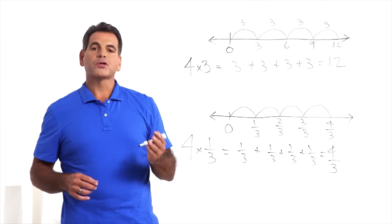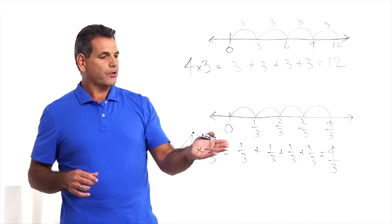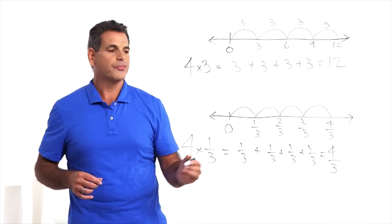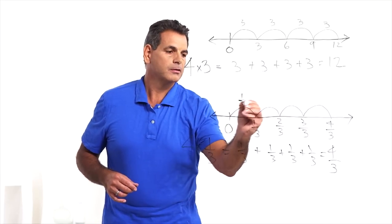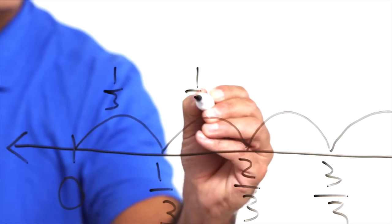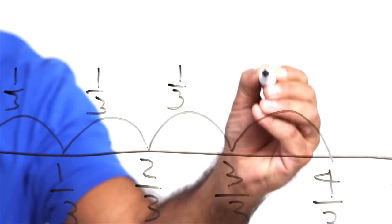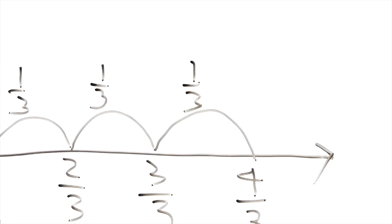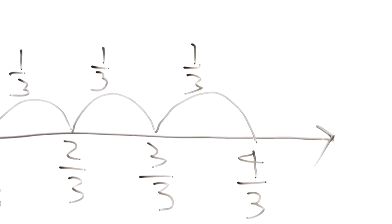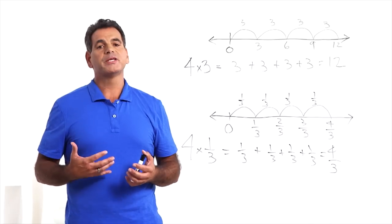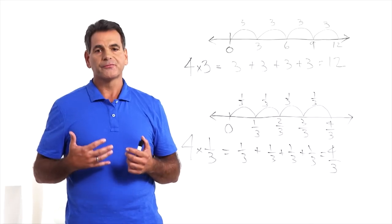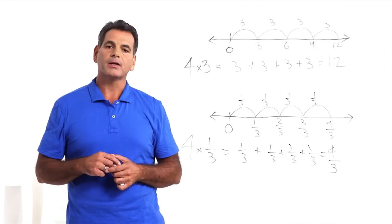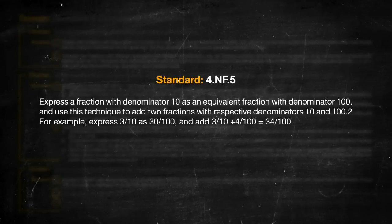Four times one-third equals four-thirds because we took four jumps of one-third and that got us to four-thirds. This concept can also be demonstrated using fraction circles or bar models, also known as tape diagrams. On to 4NF5.